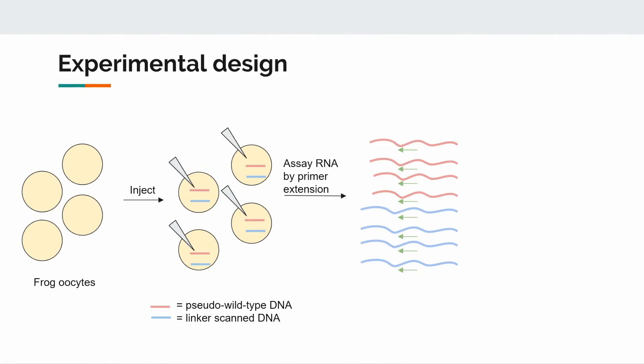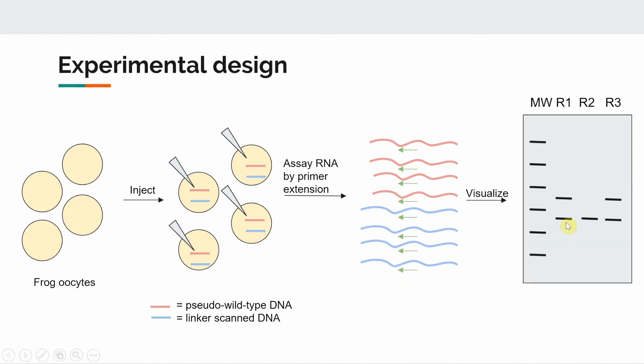The researchers let transcription happen, then lysed the oocytes and isolated mRNA. Using a common primer for both the pseudo-wild type and the mutant, they performed a primer extension assay. They then compared the pseudo-wild type and mutant conditions on a gel to see where expression differed.